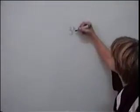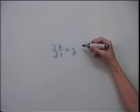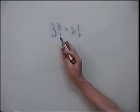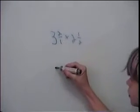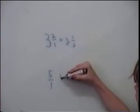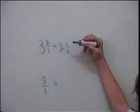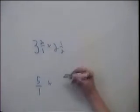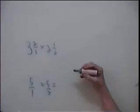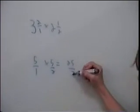3 and 2 over 1 times 2 and 1 over 2. So all you have to do, remember, 1 times 3 equals 3 plus 2, 5. So 5 over 1, then times 2 times 2, 4 plus 1, 5, so 5 over 2. 5 times 5 equals 25, 1 times 2 equals 2.